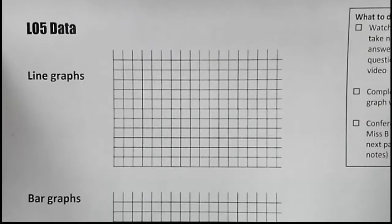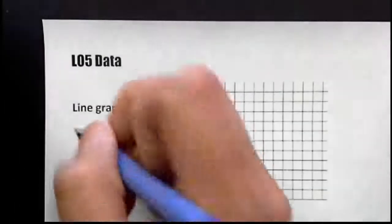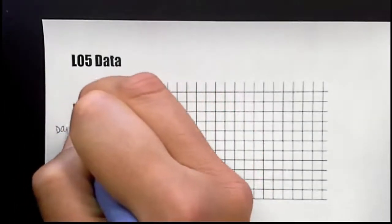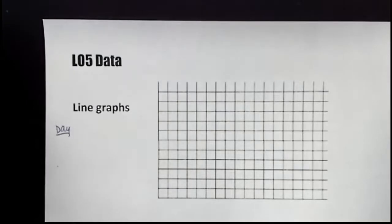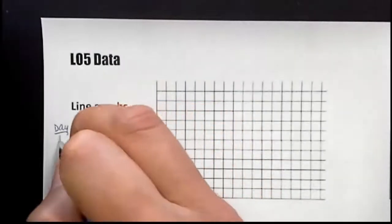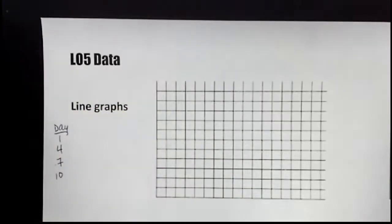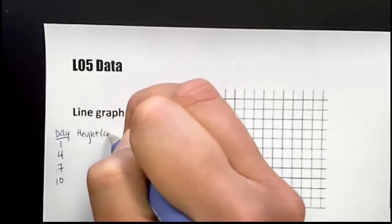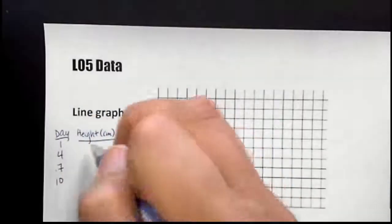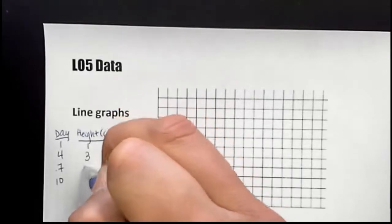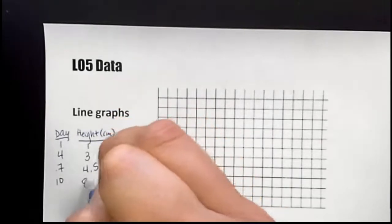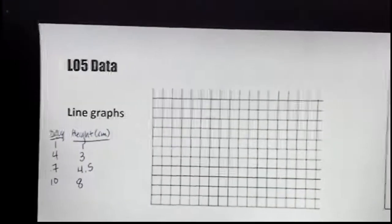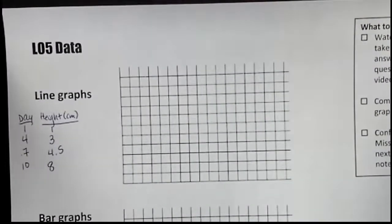First, we're just going to do a really quick example of a line graph. Off to the side, I'm going to give you a data table. It's just going to be made up. So we'll put day, and I'm just going to skip a couple days for the sake of time here. We'll do 1, 4, 7, and 10. And then in the next column, we'll say the height. We'll pretend we're measuring plants in centimeters. On day one, the plant was 1 centimeter. Here it was 3, 4.5, and 8. Again, there would normally be a lot more data points, but I'm just going through this quickly since this should be a review to you.